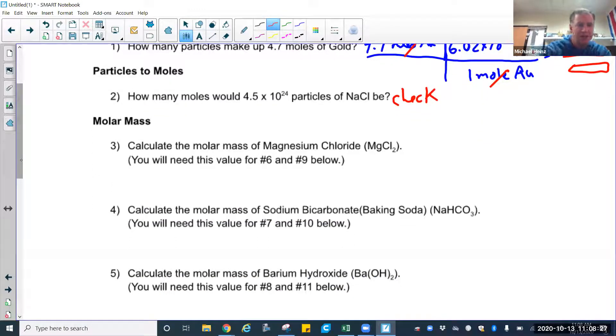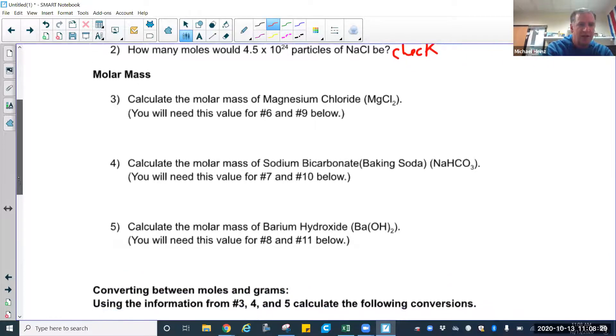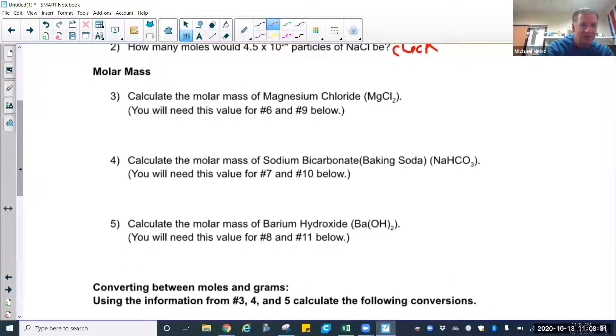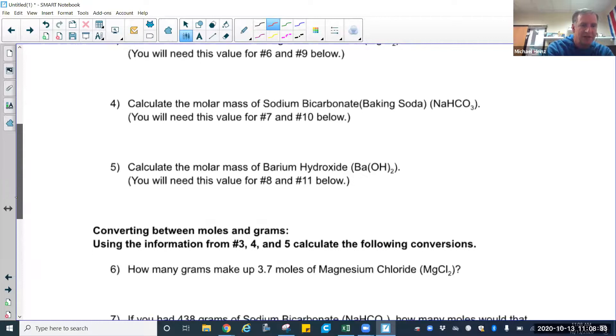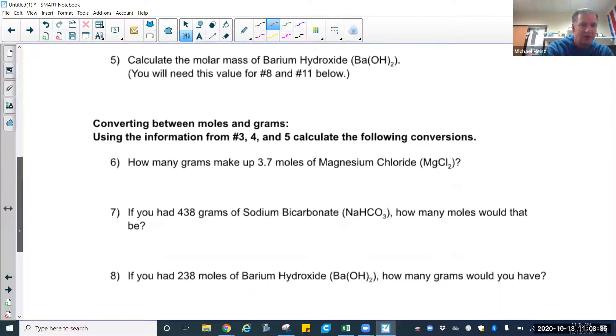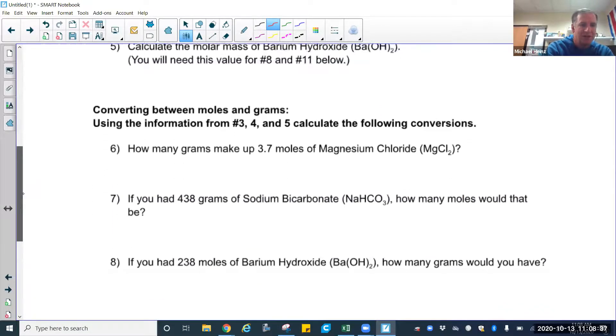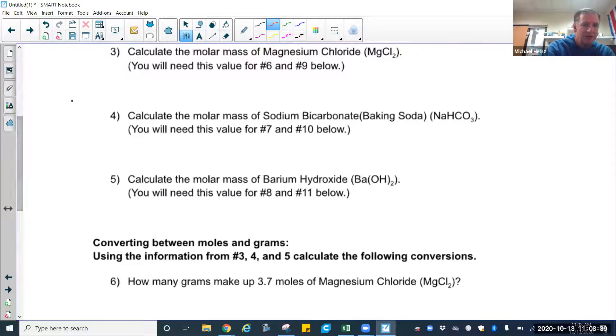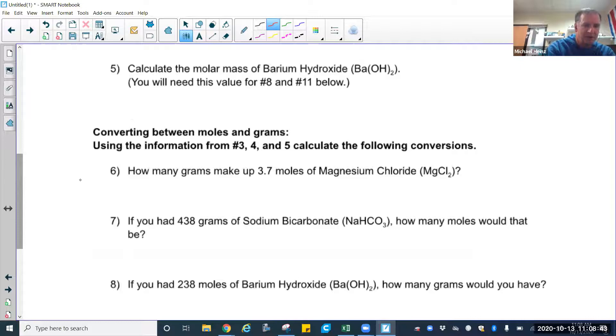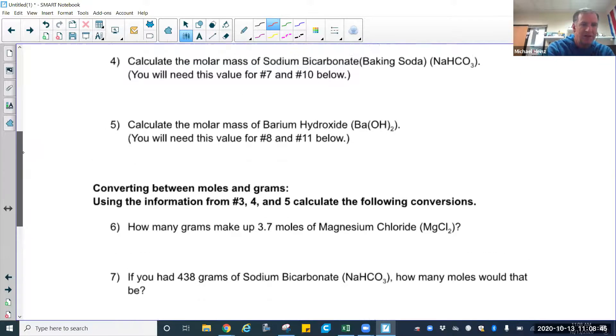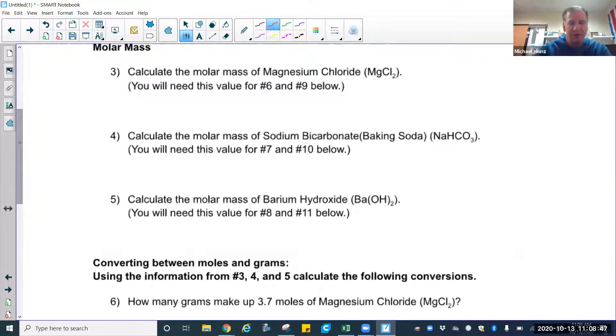Now these next ones that I did, I did them on purpose this way that I gave you three substances and then finding the molar mass. And then the three substances' molar masses get used down below in six, seven, eight. So number three corresponds to number six. Number four corresponds to number seven and number five, number eight. So don't redo the math on these. The molar masses are in there. I'm just going to do magnesium chloride. The rest of them you can figure out to do the other way.